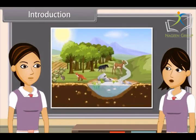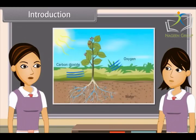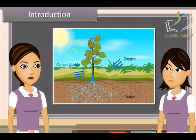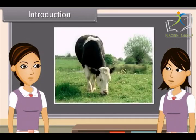When we observe closely, we find that all living things on earth actually depend on the sun for their food, directly or indirectly. Plants use the energy of the sun to prepare food by photosynthesis. These plants are eaten by herbivores and omnivores, and carnivores eat herbivores, so it is energy from the sun which provides food for plants and animals.